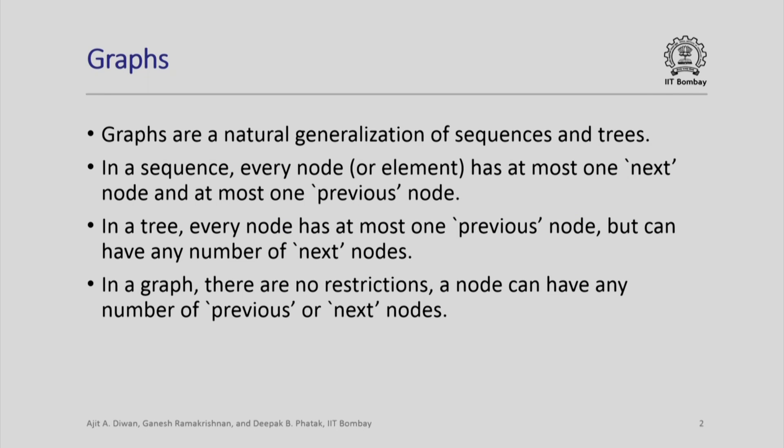In a sequence, every node or element has at most one next node and at most one previous node. The first node does not have a previous node, the last element does not have a next element; otherwise every element has one previous element and one next element. In a tree, every node has at most one previous node, which we call the parent, except the root node which does not have any parent. But a node can have any number of next nodes — they are called children in a tree.